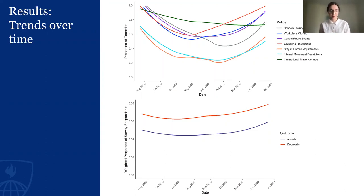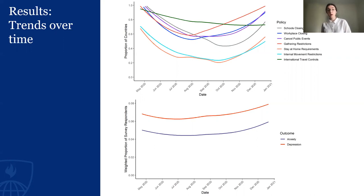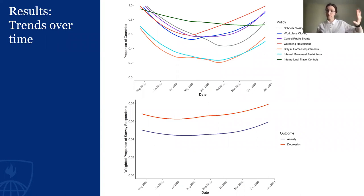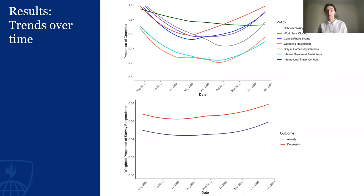Moving into the more interesting part — the results. On this first slide, this is a descriptive overview of both the non-pharmaceutical interventions and anxiety and depressive symptoms over time. In the top plot, the x-axis is time — basically how many countries had a certain non-pharmaceutical intervention in place at a given time. You can see that in May 2020, near the start of the pandemic, most countries had these types of interventions in place. Then over the summer this proportion declined, but then increased again as cases rose into the fall and winter. If you look at the second plot where we look at anxiety and depressive symptoms over time, they follow a similar shape — I think that was a really interesting preliminary finding, seeing how the pattern of mental health symptoms mapped onto the non-pharmaceutical intervention proportion.